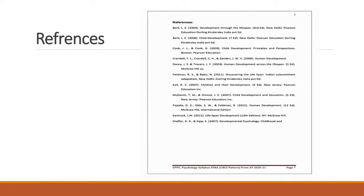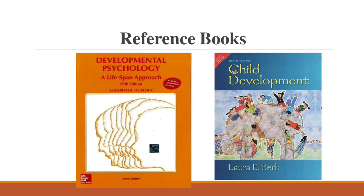Now the references — how you should study. The university has given a list containing books by Bernard Berk, Cook, Burke, Desi, Feldman, Kali, McDevitt, Santrock, and Schepern. For simplicity, I have narrowed it down. The two easiest books I found are: first, Developmental Psychology: A Lifespan Approach by Elizabeth Hurlock — a classic book available in our department library. The edition is old but still very useful. Second is Child Development by Laura Berk, a very good and updated book with a lot of interesting concepts and new research.